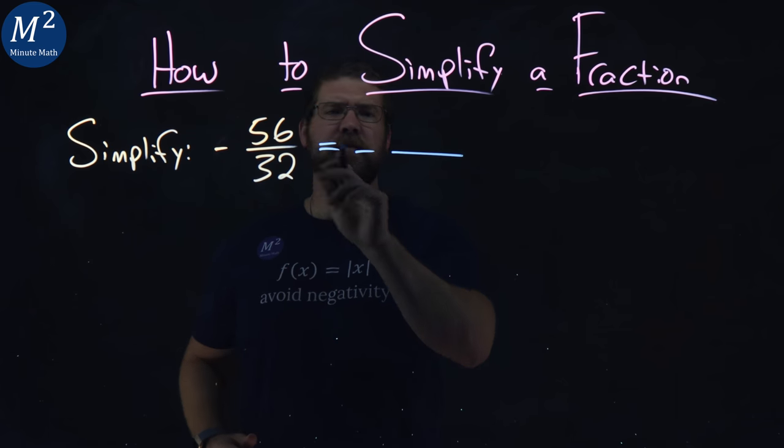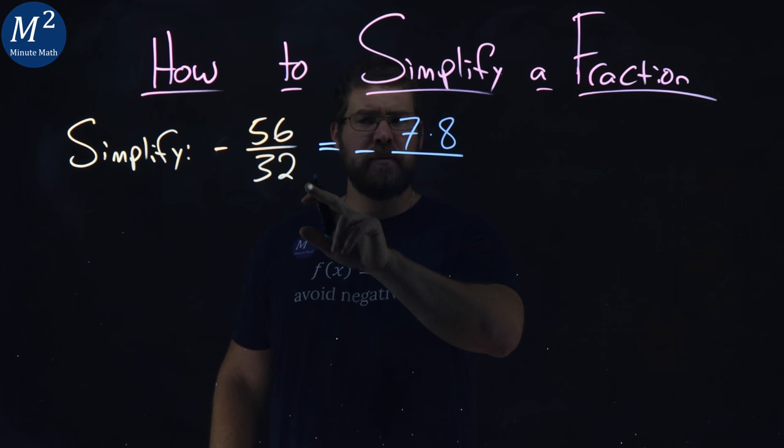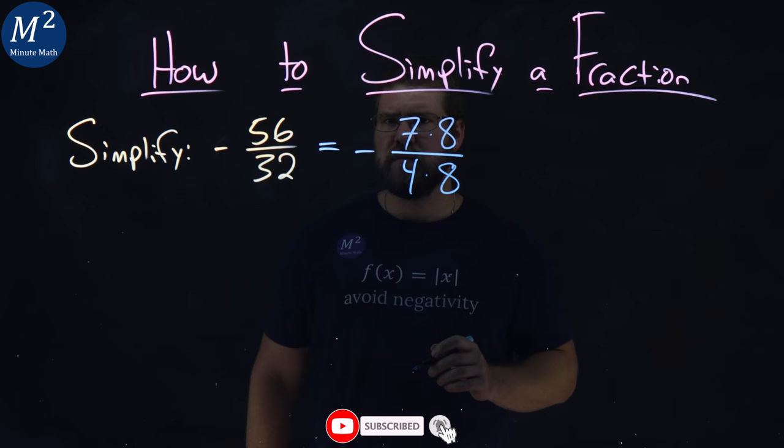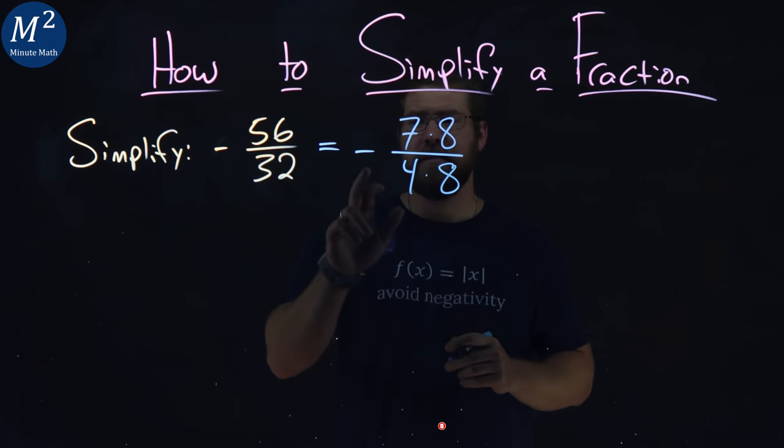Negative sign stays out there. 56 is 7 times 8, and 32, well, that's 4 times 8. So we have 7 times 8 in the numerator and 4 times 8 in the denominator, and don't forget the negative sign.